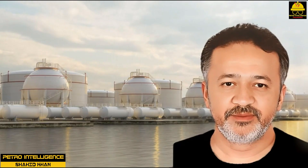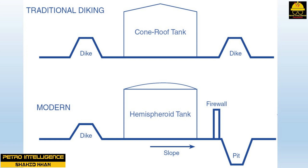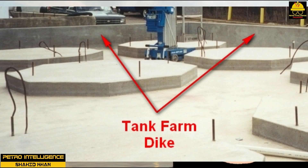A dike is best described as a containment wall or ditch that extends around a tank to prevent product loss. A variety of safety designs have been proposed. Dikes are composed of earth, concrete, or metal. Firewalls and trenches are also used in dyking designs.